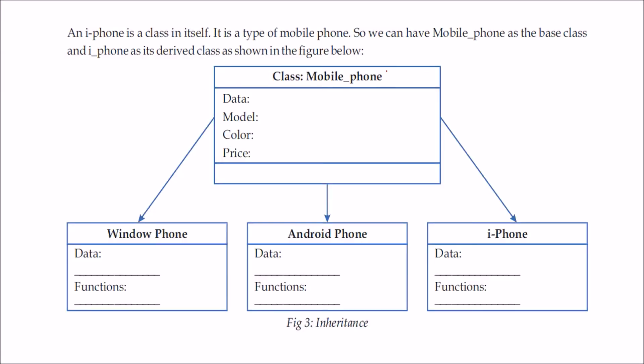Let us see this with an example. We have a mobile phone class. This mobile phone class has this data called model, color and price. The best way is to have a Windows phone. This is the derived class which is having data and functions maybe of its own along with all of this stuff.